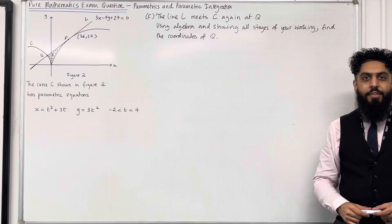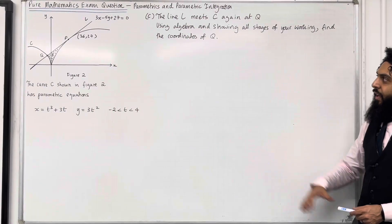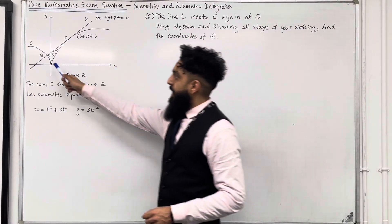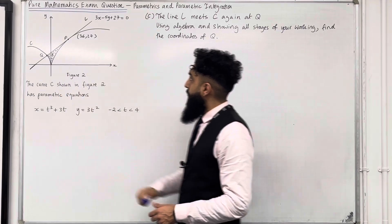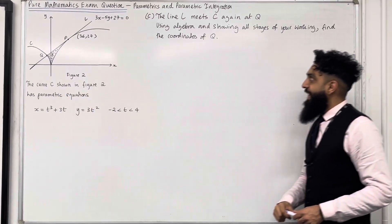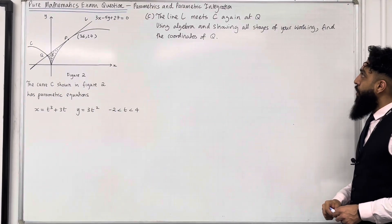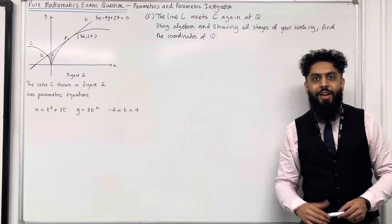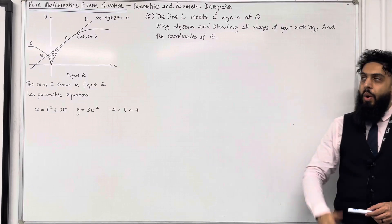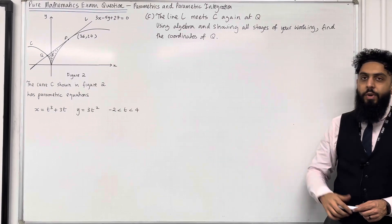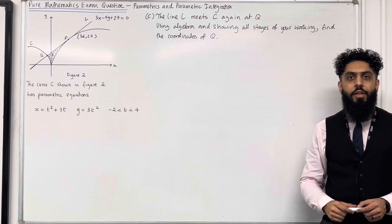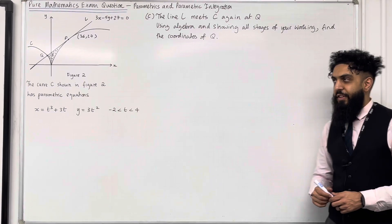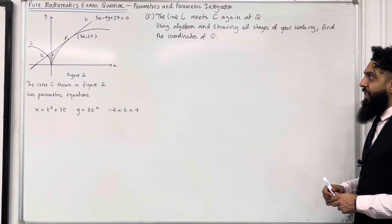Let's have a look at part C. The line L meets C again at the point Q, as shown in figure 2. Using algebra and showing all stages of your working, find the coordinates of Q. Please pause the video, have a go at part C, and once you've got your complete solution, play the video.